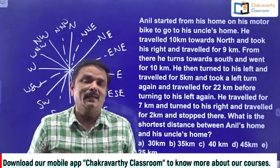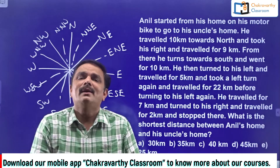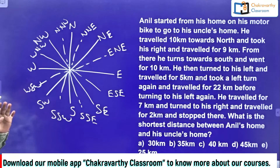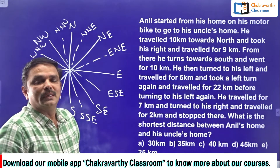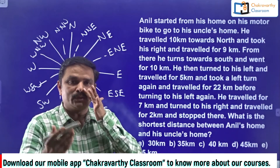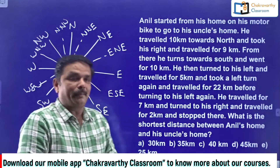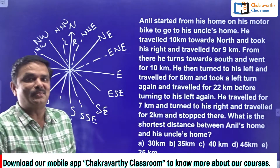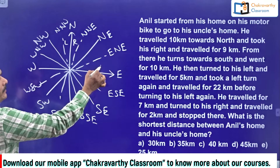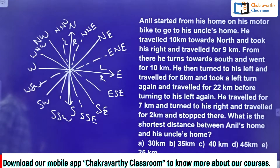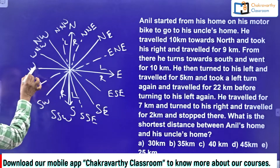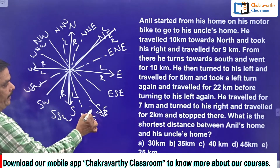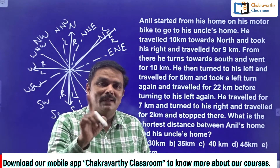Always remember: in competitive exams, questions can come from anywhere, so you must learn everything. After knowing the directions, it is better to know the sides also. About 10% of students get confused. For example, if a person is going towards north, right is east and left is west. If going east, right is south and left is north. If going south, right is west and left is east. You should be thorough with the sides as well.